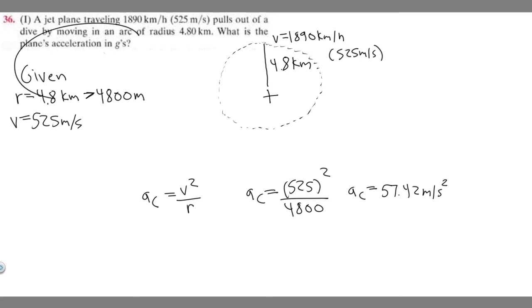So notice, though, they're asking for the plane's acceleration in g's. So what we have to do is convert this into g's. And the way we do that is just by taking this number and dividing it by 9.8. So 57.42, if you go ahead and divide it by 9.8, you're going to get that equals 5.86 g. So this is the number of g's, 5.86. And that's going to be your answer to this problem. Hopefully you found this useful.